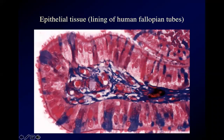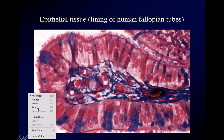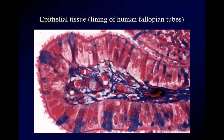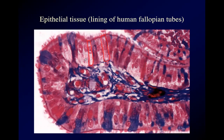Here's what some of these look like. This happens to be the lining of a human fallopian tube — the tube that carries egg cells from the ovary to the uterus. This is a subtype of epithelial tissue called columnar epithelium. I'm drawing a line around one of them. Each one of these things that looks like a column is an epithelial cell — you can see the nucleus in each one of them.